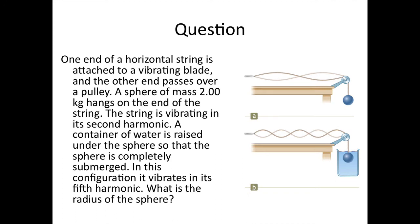So some questions for us to try. One end of a horizontal string is attached to a vibrating blade, and the other end passes over a pulley. A sphere of mass 2 kilograms hangs on the end of the string. The string is vibrating in its second harmonic. A container of water is raised under the sphere so that the sphere is completely submerged. In this configuration, it vibrates in its fifth harmonic. What is the radius of the sphere?